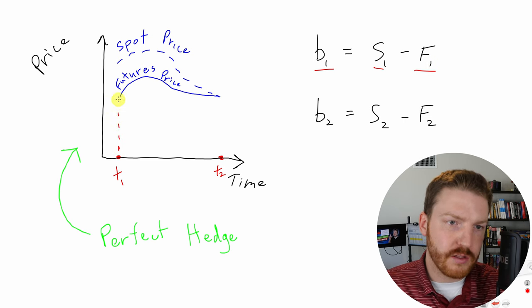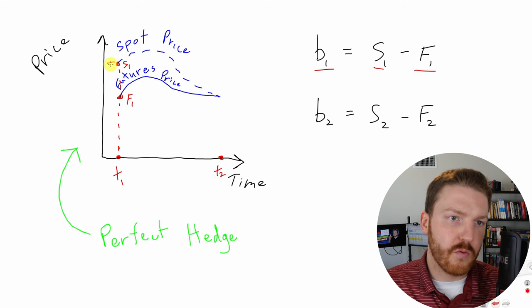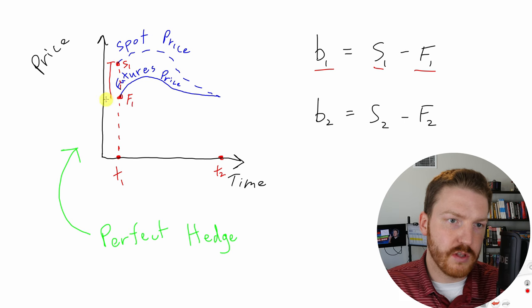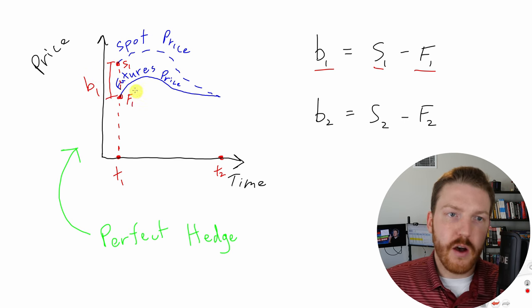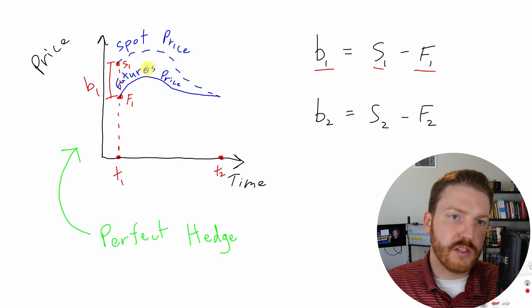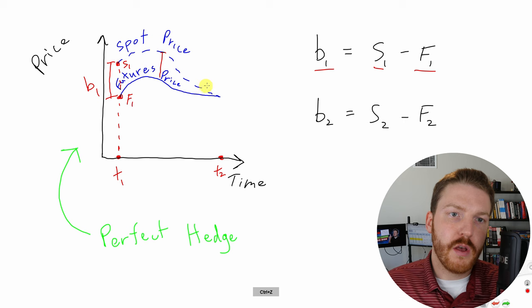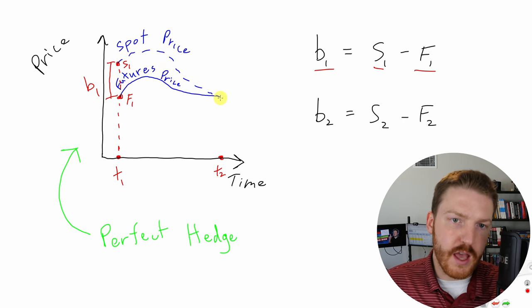So if we draw this up like this, we'll see right here is F1. If we keep going up, we'll see right here, this is the spot price at time one, so S1. And then right here, the difference between the two will be equal to B1. As time changes, we see that the spot price and the futures price keep changes. So we'll have different basis at different points like this and this, but then eventually we'll get to the end.